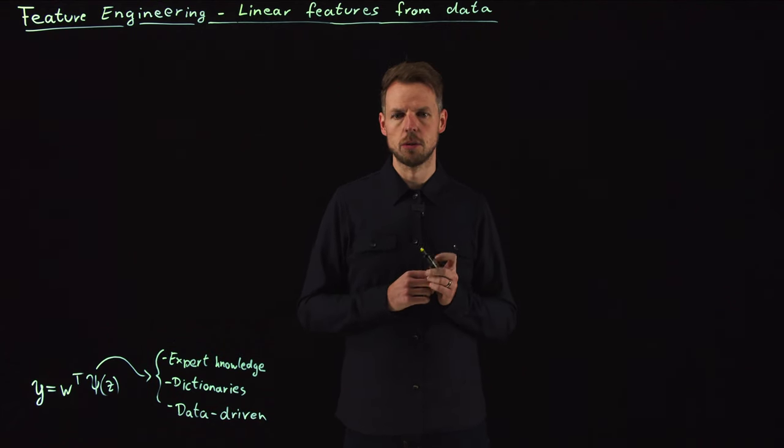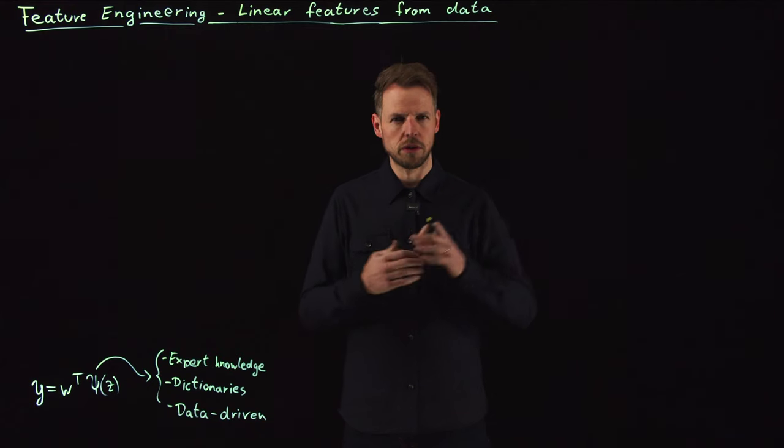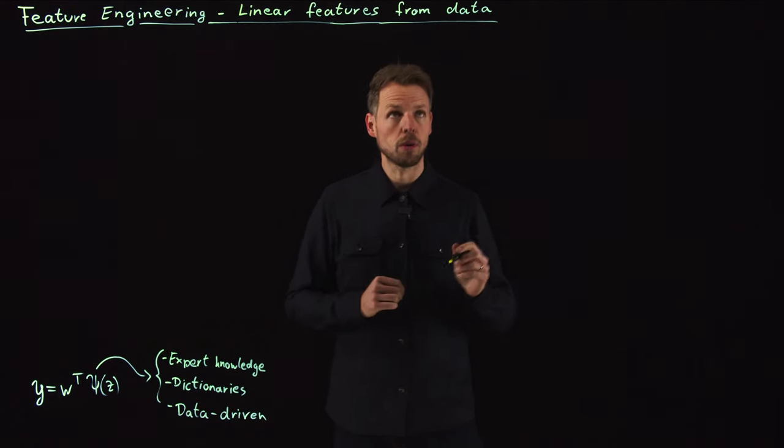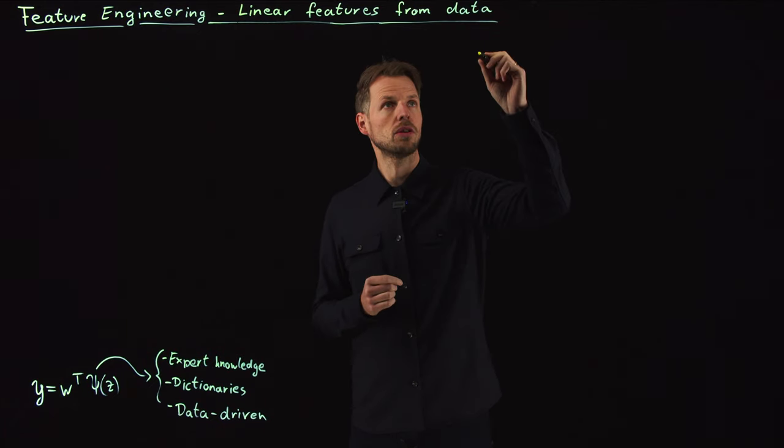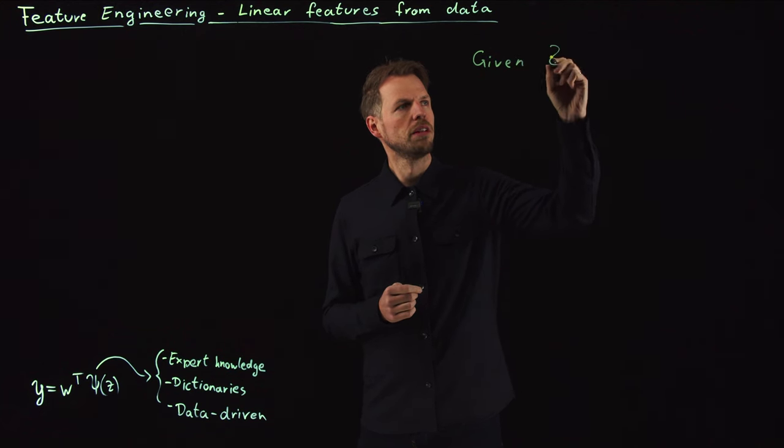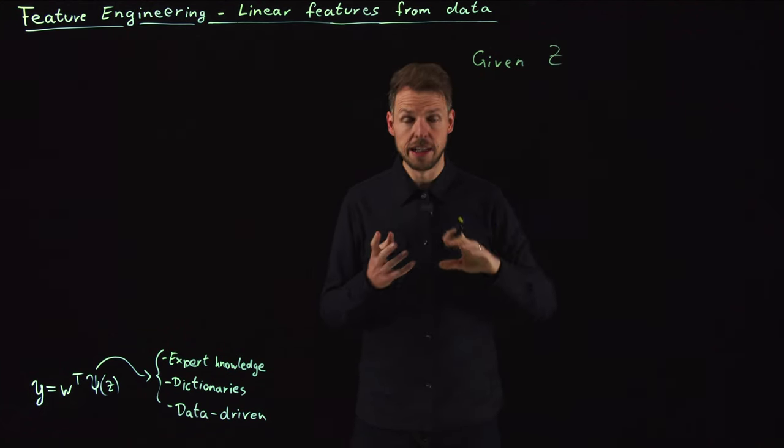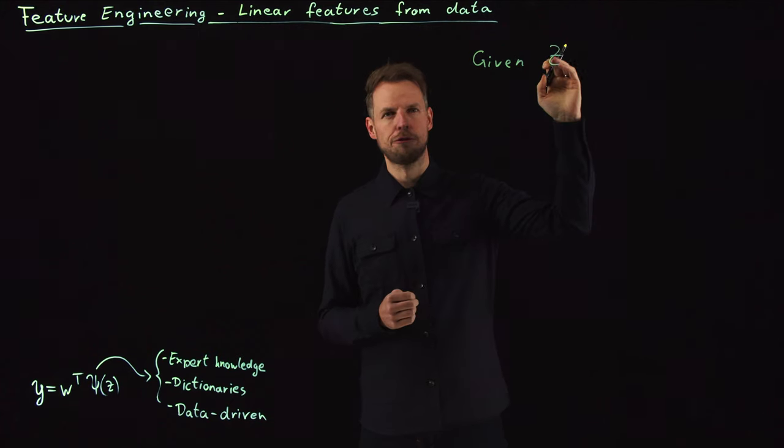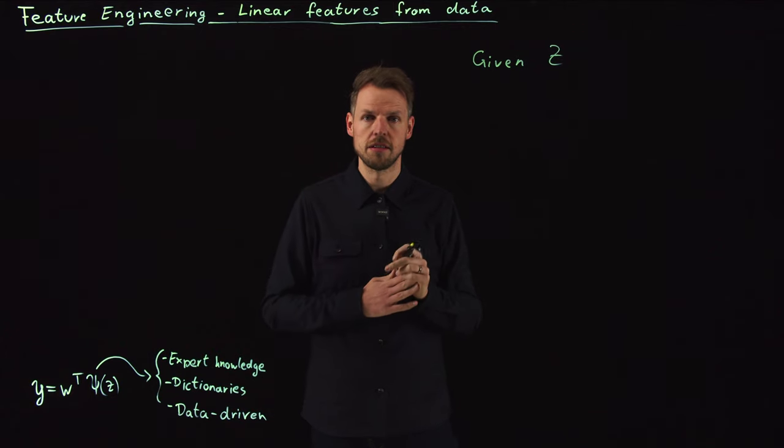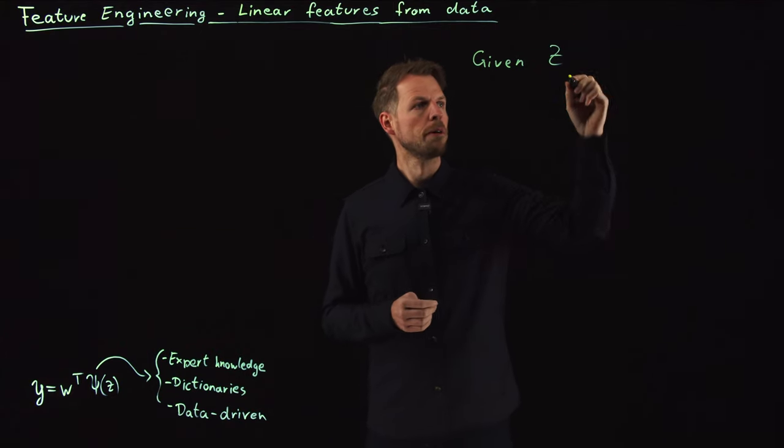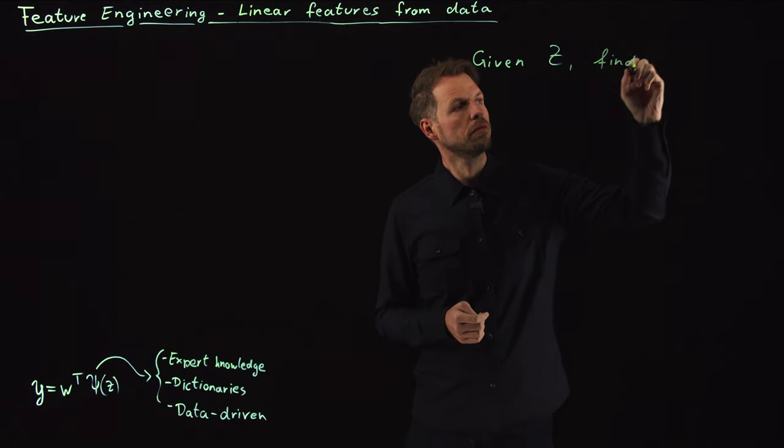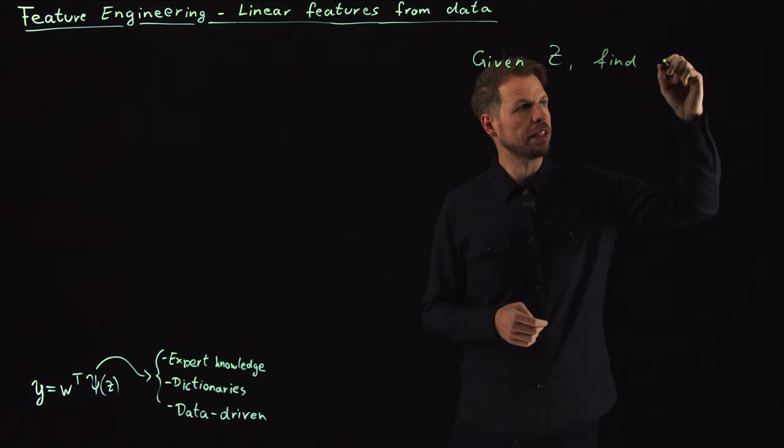I just want to give you an overview of how these features can be used. So what's the idea? We want to have these linear features. So given our data, let's get this data matrix Z. The task is to find a linear transformation from the data set—not use a dictionary and define a standard basis like Fourier modes or polynomials, but find a basis or a linear transformation from the data.